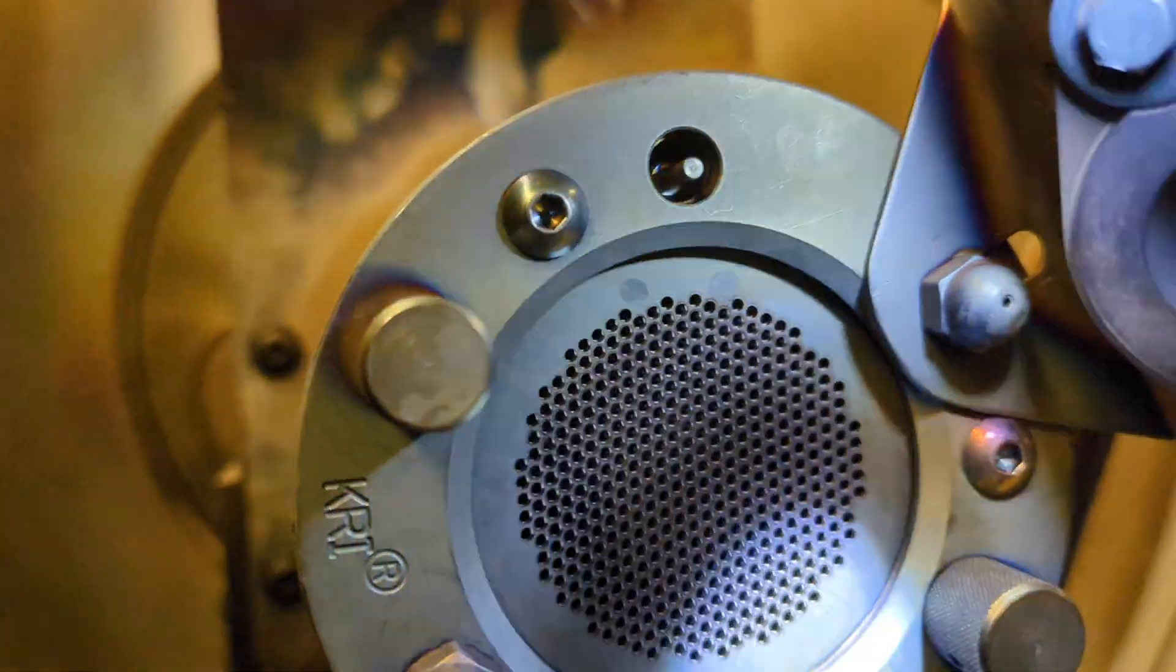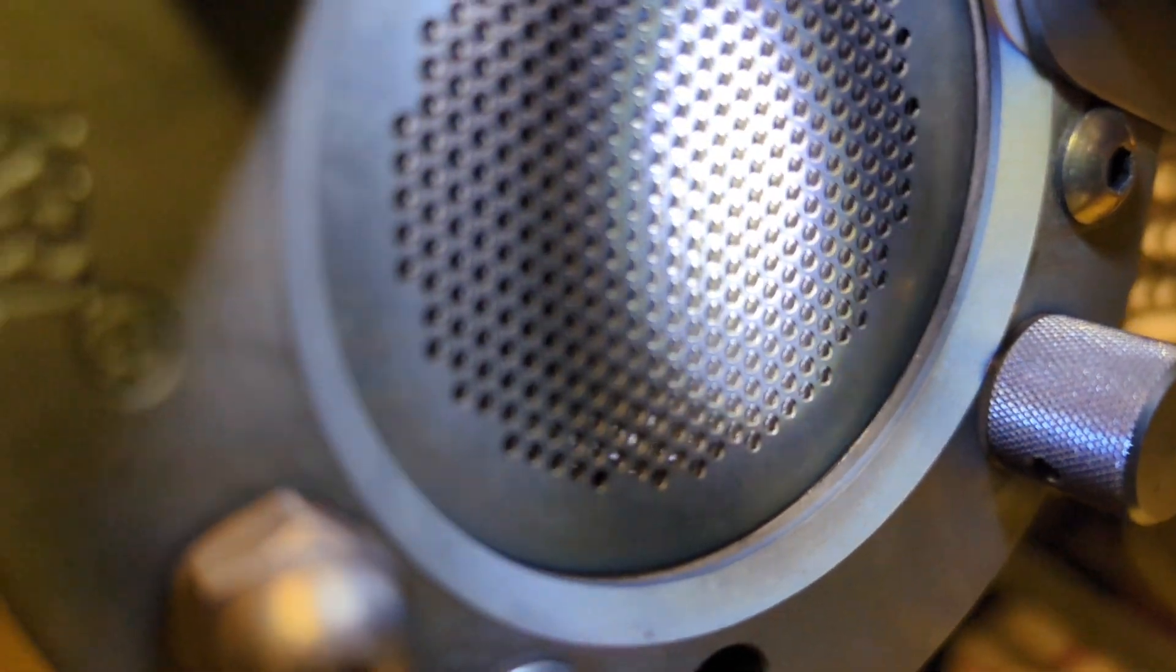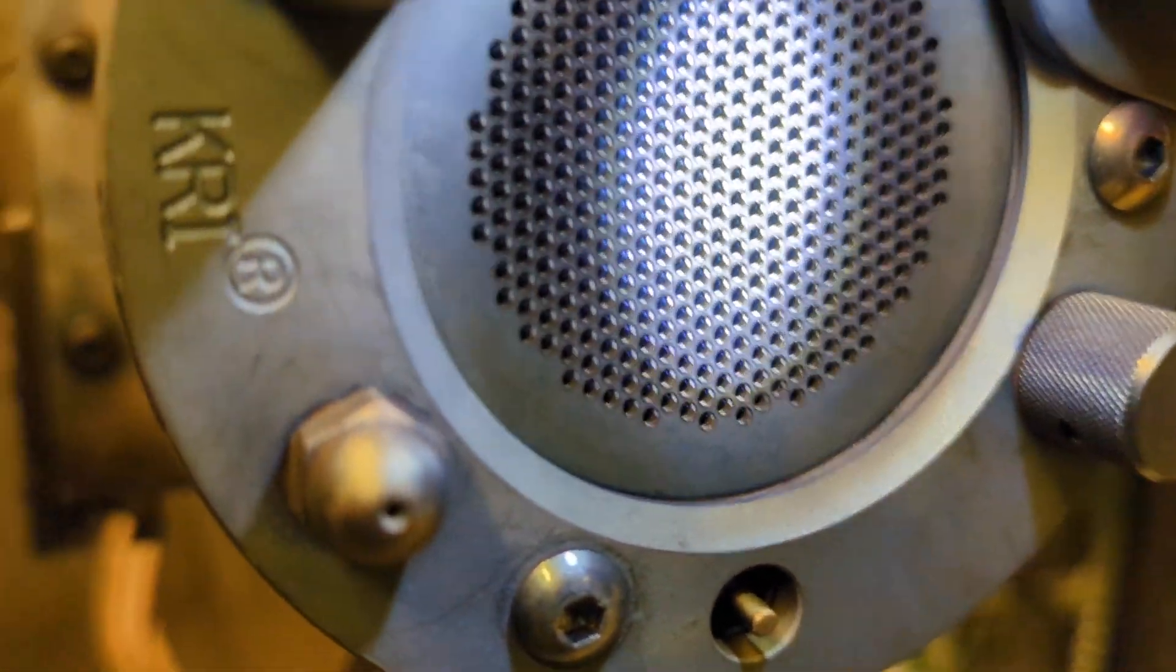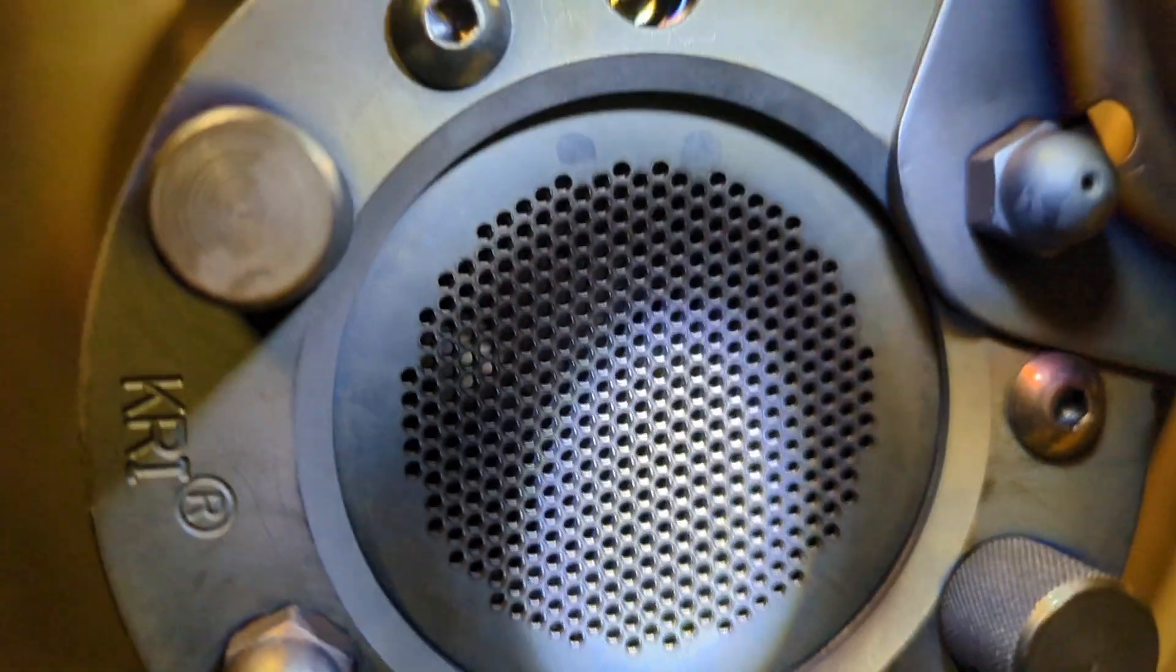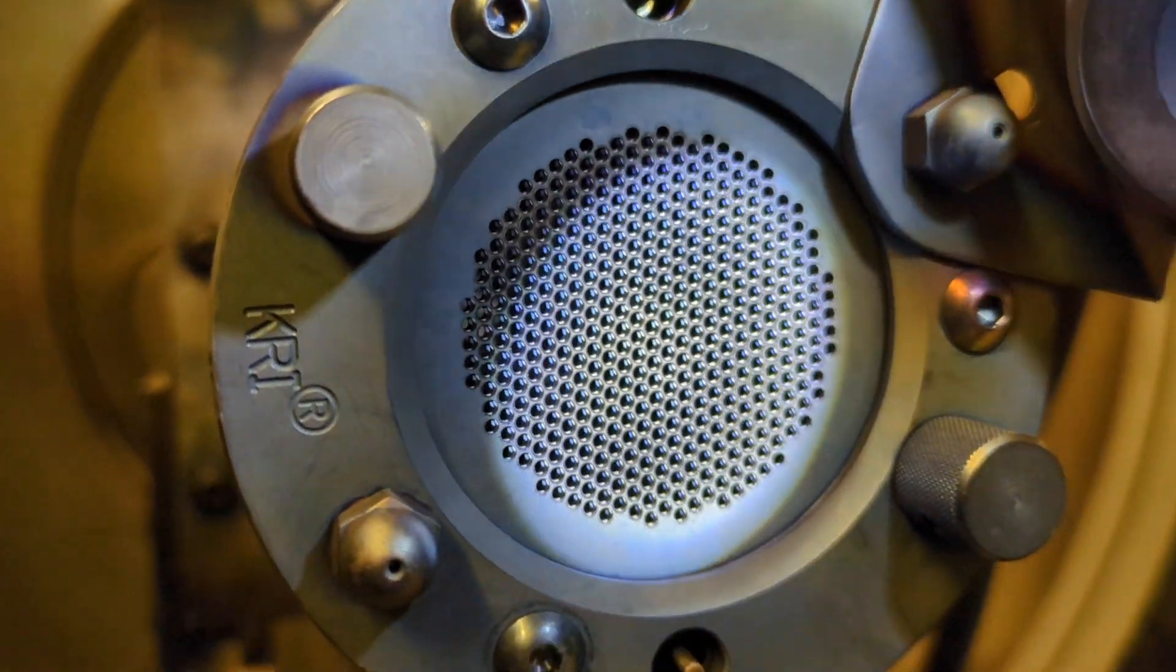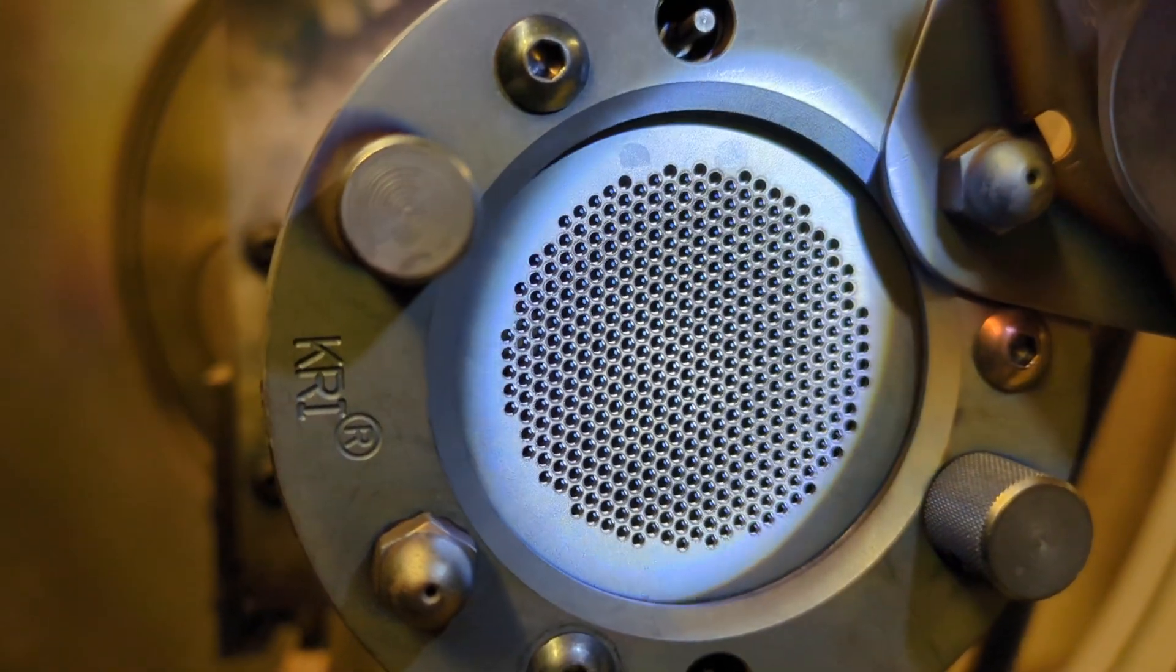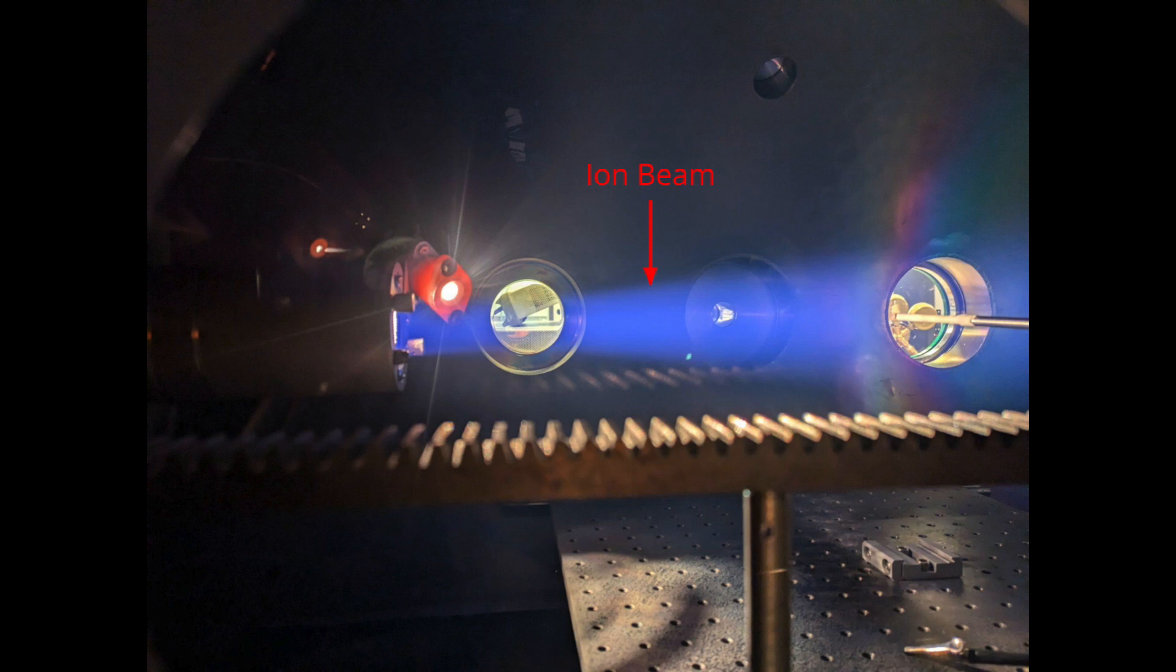Here we have the electrode grids. It's hard to see, but there's actually two grids there. They're only separated by a couple of millimeters because we want to minimize the number of ions that are between the grids at any one time when the thruster is operating. You can't really see it here, but these grids are actually slightly concave, and that helps keep the ion beam in a nice, tight beam as we're firing it.